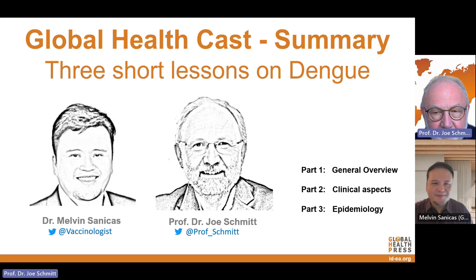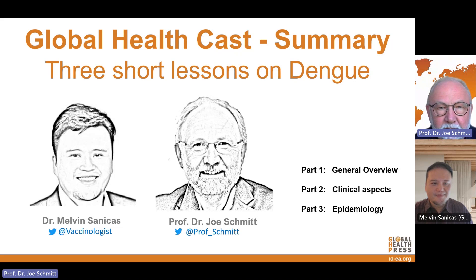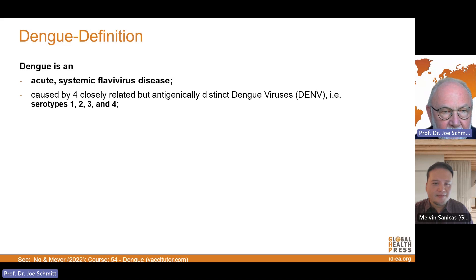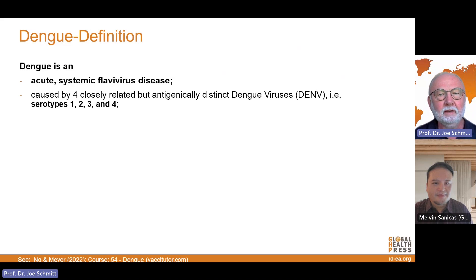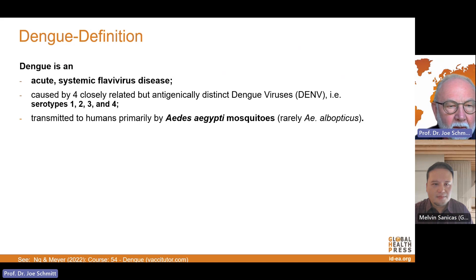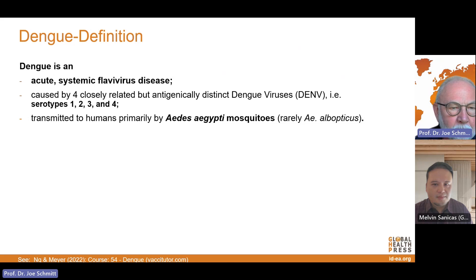We want to give a short introduction with a general overview, clinical aspects, and the epidemiology of dengue and dengue virus. The summary is that dengue is an acute systemic flavivirus disease. It is caused by four closely related but antigenically distinct dengue viruses, named dengue virus serotypes 1, 2, 3, and 4. The virus is transmitted to humans by Aedes aegypti mosquitoes, rarely by Aedes albopictus, and the reservoir is humans and non-human primates.